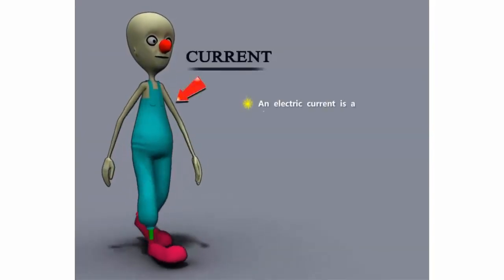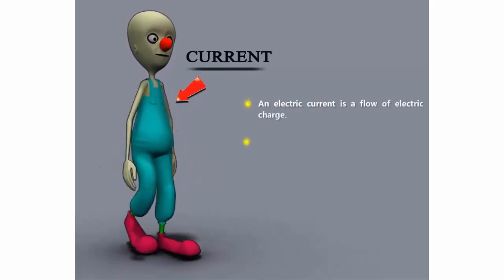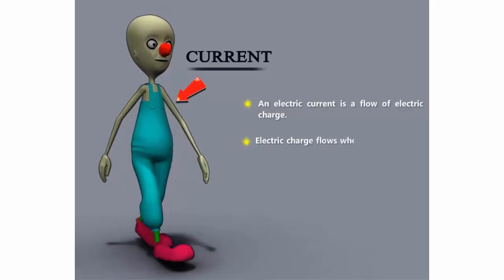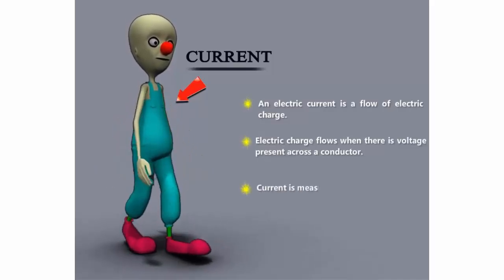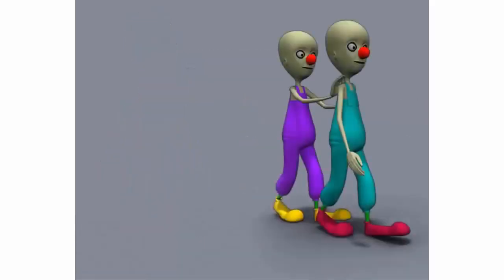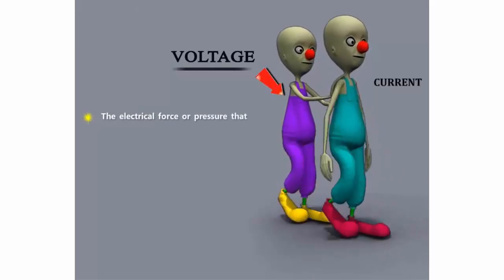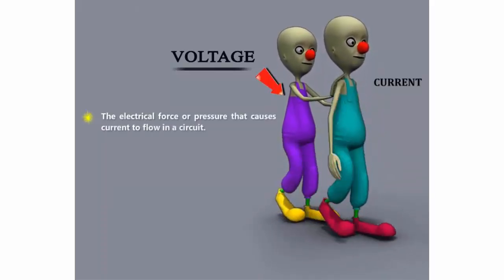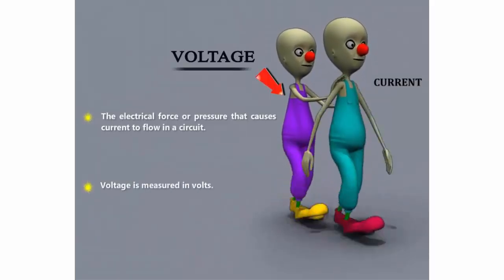Electric current is the flow of electric charge. Electric charge flows when there is voltage present across a conductor. Current is measured in amps. Voltage is the electrical force or pressure that causes current to flow in a circuit. Voltage is measured in volts.